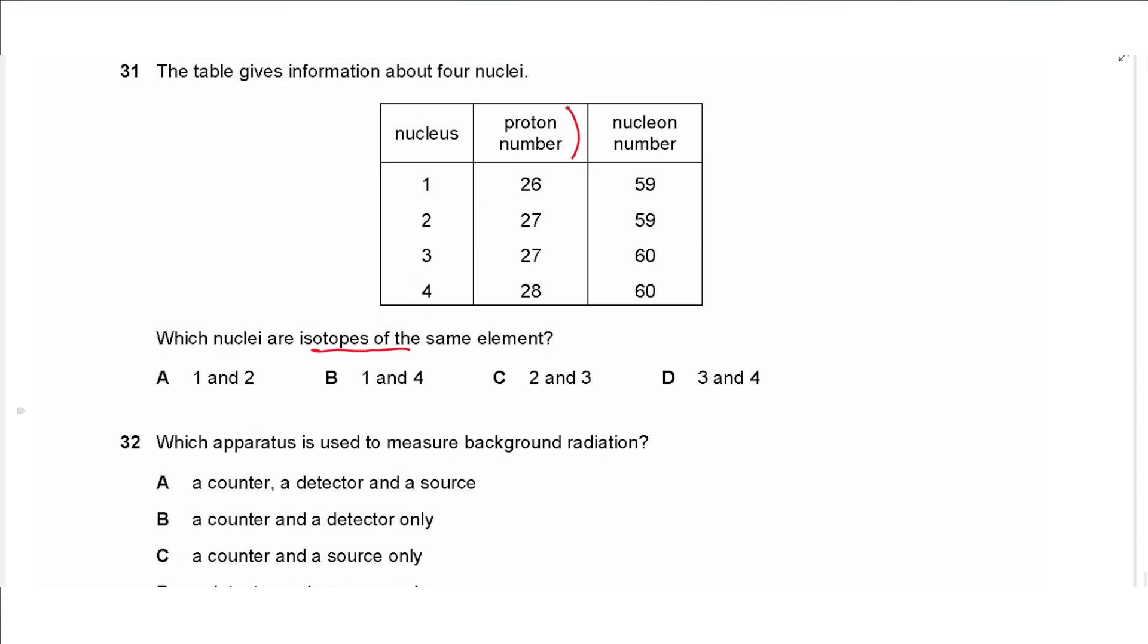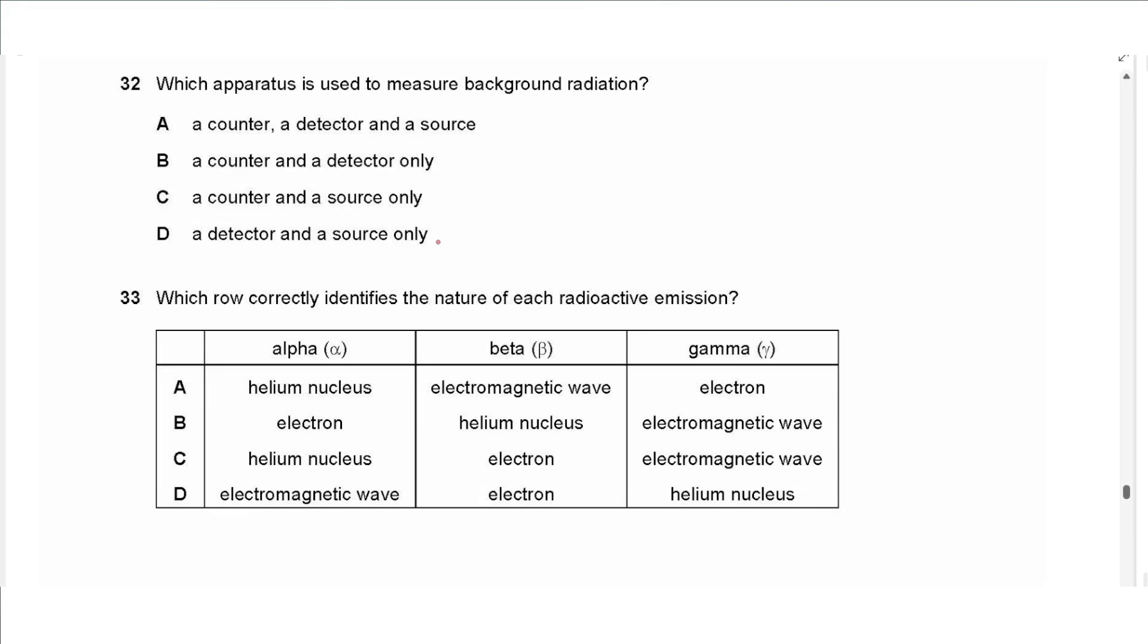Question 31 says the table gives information about four nuclei. Which nuclei are isotopes of the same element? They must have the same proton number, so these two, two and three, so the answer is C. Question 32 says which apparatus is used to measure background radiation. So background radiation means there is no other source of radiation, so any choice containing source of radiation is not accepted. So the choice is B, a counter and a detector only.